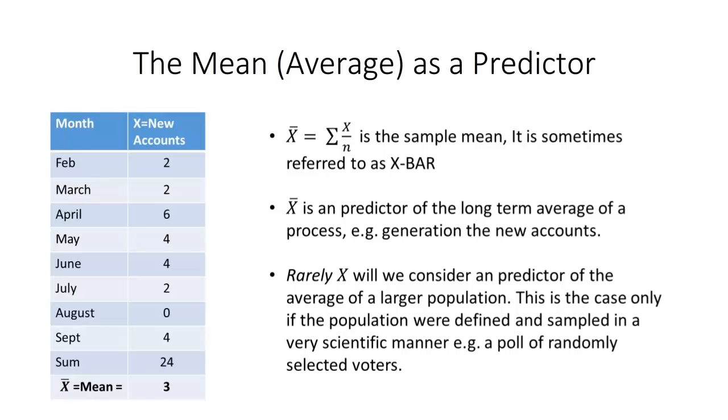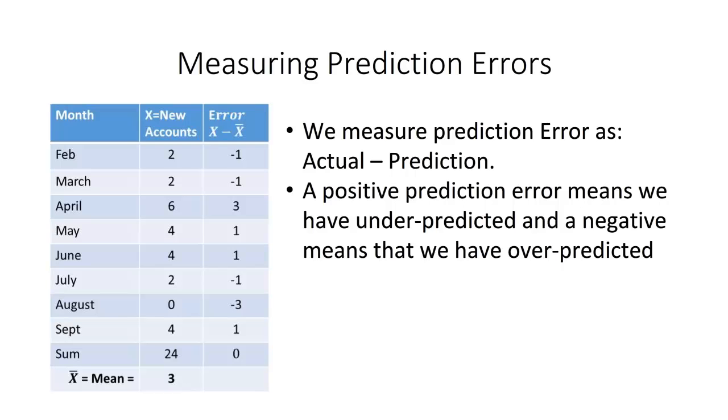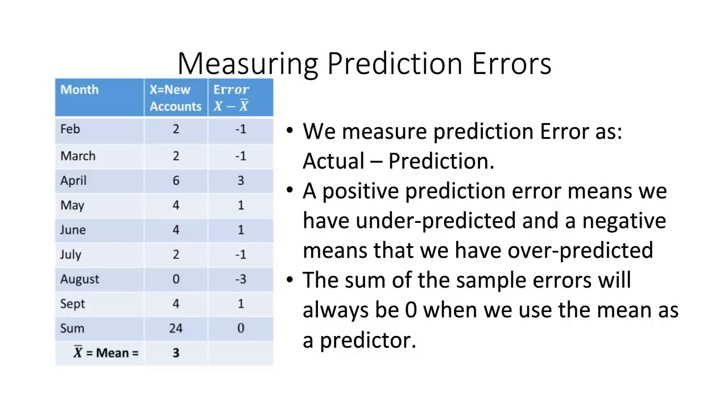We measure the error as a deviation. So to measure prediction error, we take each of the X's and subtract the mean. For example, in February, X is 2, and we subtract the mean of 3, and we get an error or a deviation of minus 1. The general convention is that the error will be defined as the actual minus the prediction. And so a positive prediction error or a positive deviation means that we have under-predicted for that particular value of X, and a negative means that we have over-predicted. Notice that when I sum all of the errors, I get a total of 0. That will always be the case with the mean as the predictor. That tells us that the average error is 0, which is nice. Our errors are balancing out, but it does not tell us about how good or how bad the individual predictions are.